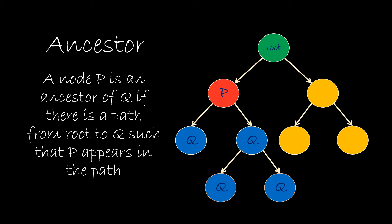An ancestor is similar to grandparents. If we talk in terms of this diagram, node P is the ancestor of Q if there is a path from root to Q such that P appears in the path. So here we can see P is the ancestor of all the Q nodes below it.